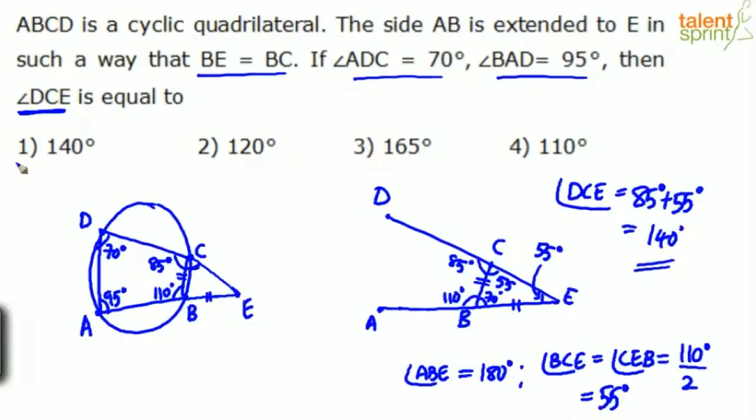And again, like I usually say, you need not write all these statements on paper. I would say this question can be answered just by drawing the diagram properly. Once you've drawn the diagram properly, you can mark all the values on the diagram itself. You need not write AB is 180 degrees, DC equals CEB equals 110 by 2 and all that stuff. So try to cut down the number of steps. The point to be taken here is cut down the number of steps and get the answer as quickly as possible. 140 degrees, option one.